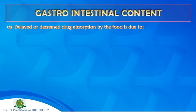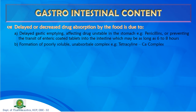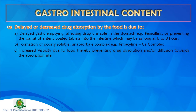Delayed or decreased drug absorption by food occurs due to: delayed gastric emptying affecting drugs unstable in the stomach (e.g., penicillin); prevention of enteric-coated tablet transit into the intestine (delay up to 6–8 hours); formation of poorly soluble, unabsorbable complexes (e.g., tetracycline-calcium complex with milk or calcium-containing foods); and increased viscosity from food, which prevents drug dissolution and diffusion toward the absorption site.